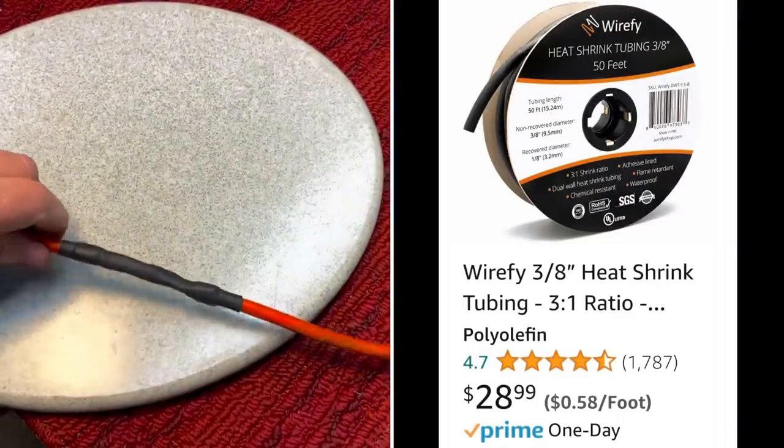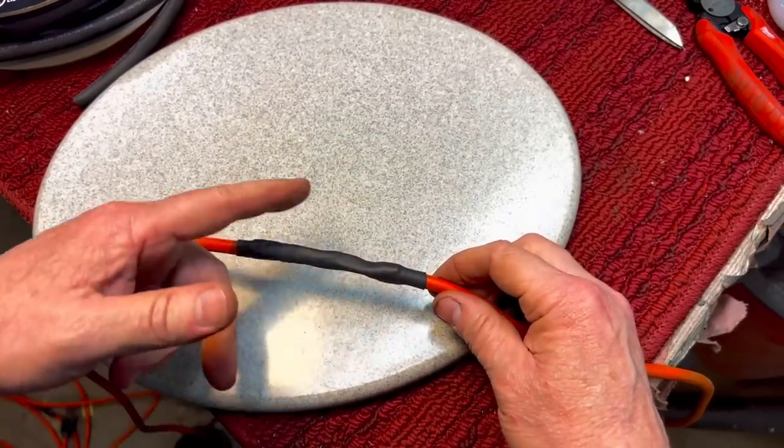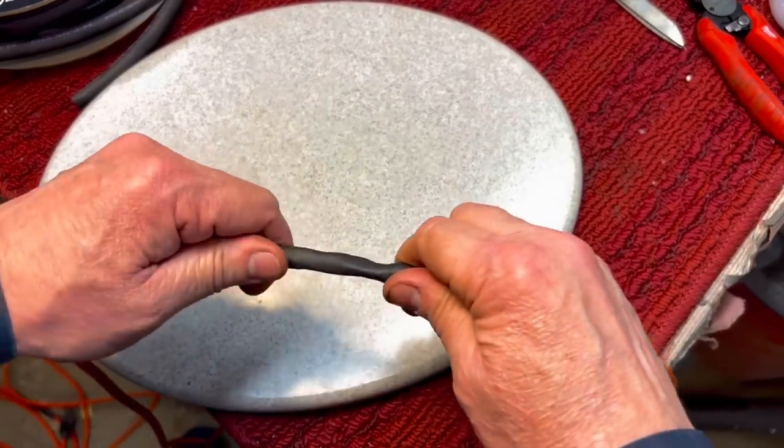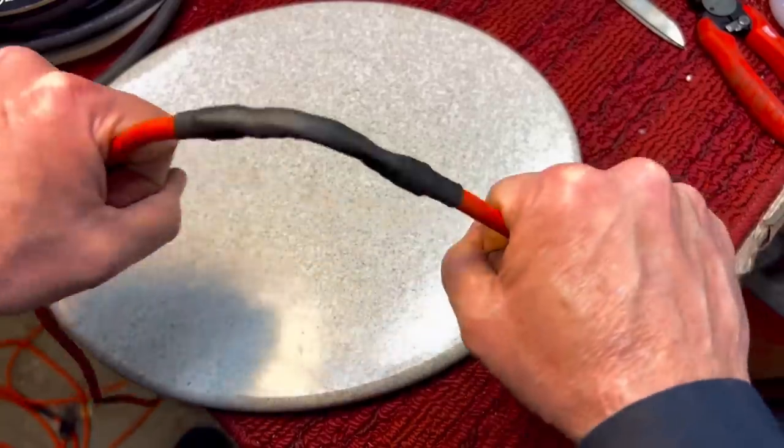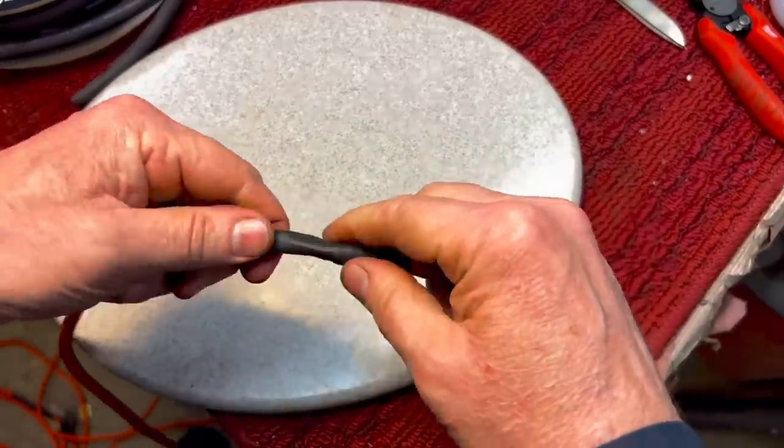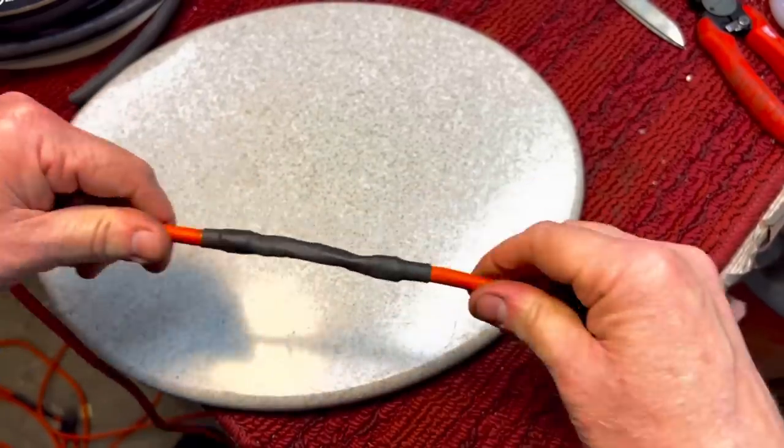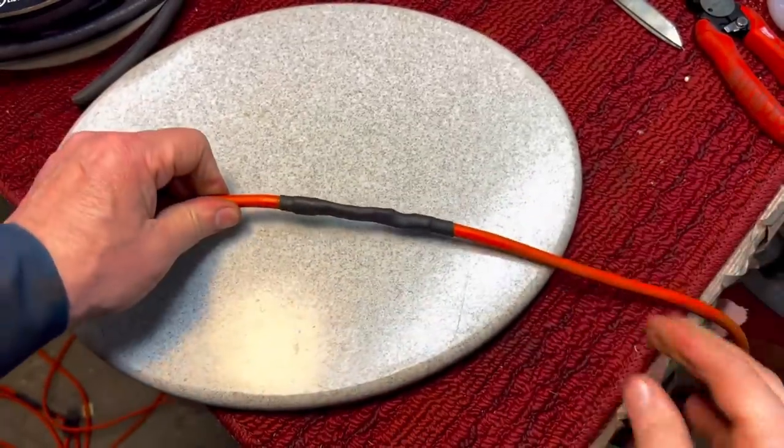And here you can see the repair. Now this has two forms of heat shrink, electrical tape, and most important, the strain relief. This is super strong. This won't come out. That is strong because now you've got that cord running around it and taped over here and then held down. So that's a good repair.